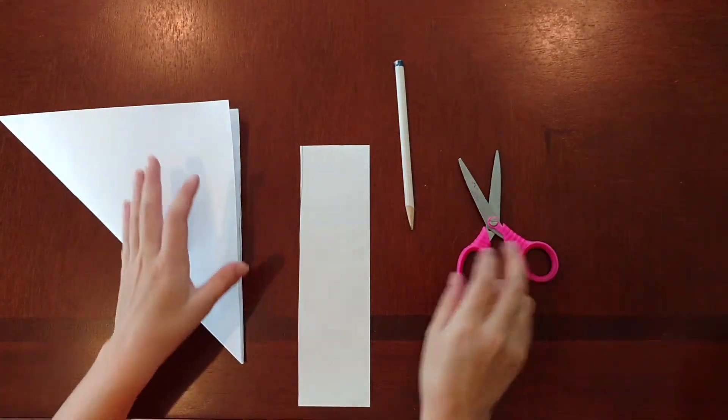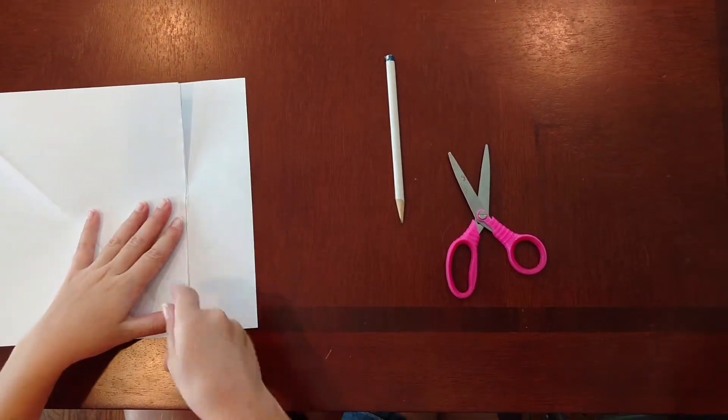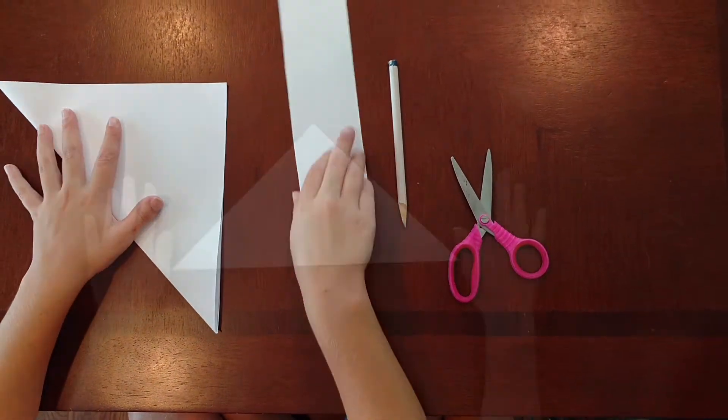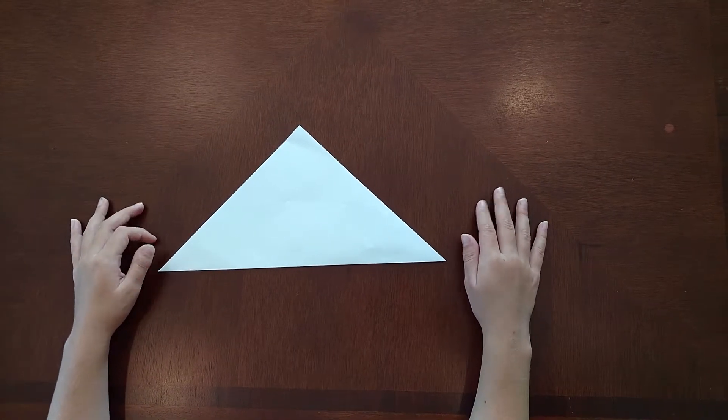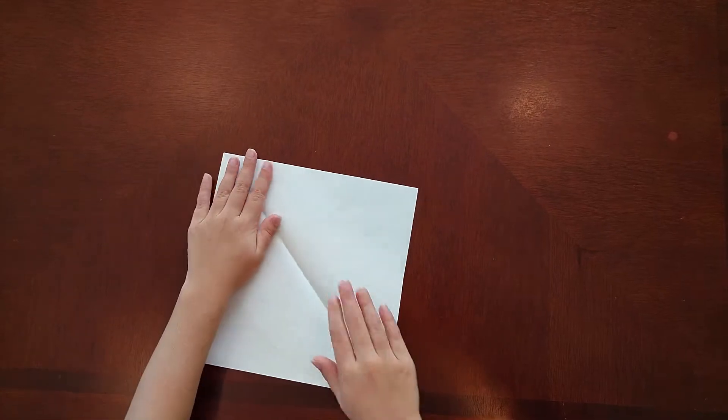Or you can make a line and do that and then cut it. But I do it like how I just did. Now it should look like a big triangle. Now you unfold it. It looks like a diamond. You flip it over to a square.